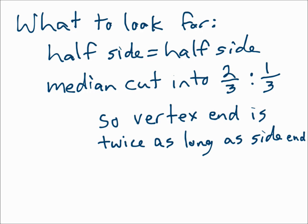What do you look for with the medians? Since the sides are cut in half, you'll have a half-side measure equal the other half-side measure. And since the medians are cut into segments with ratios two-thirds to one-third, then the vertex end is twice as long as the side end.